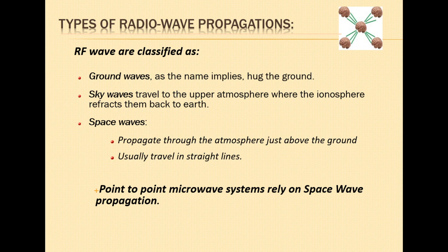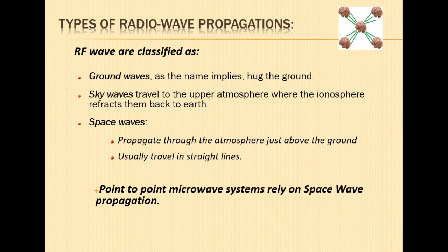There are also sky waves, which travel towards the sky and are reflected from the ionosphere. Sky waves are generally used with VSAT-type networks because they can penetrate through the sky and travel very far. Then the waves we are usually concerned with are called space waves — the normal waves used for point-to-point communication and wireless mobile networks. These waves propagate in the normal atmosphere just above the ground and usually travel in straight lines. Our point-to-point microwave system relies on these space waves.